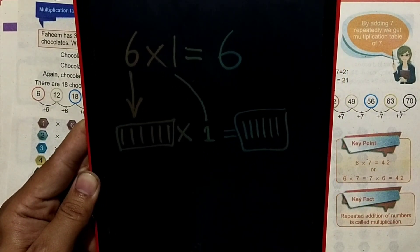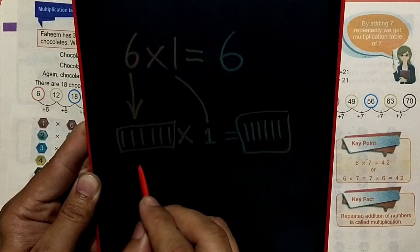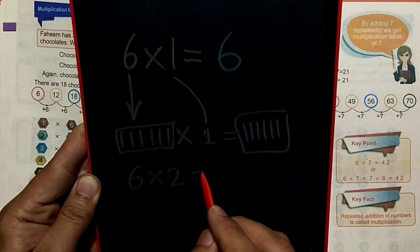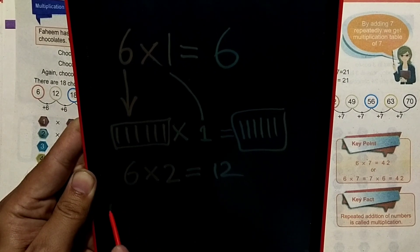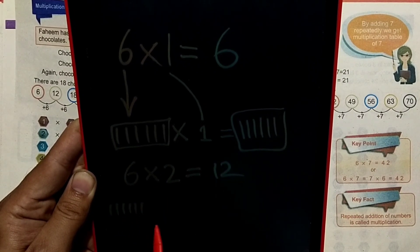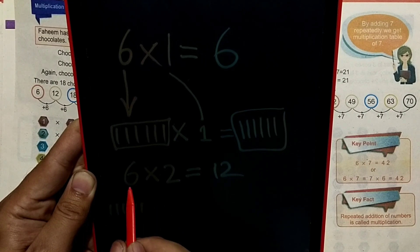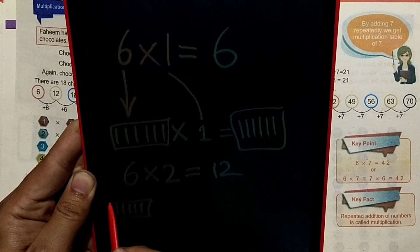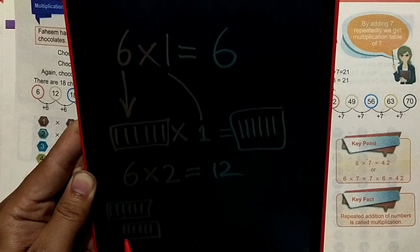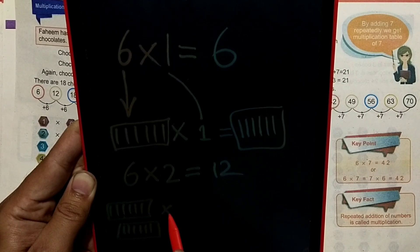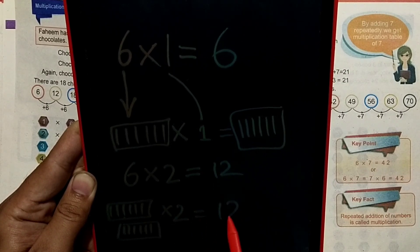I will tell you — 6 times 2 is equal to 12. 1, 2, 3, 4, 5, 6. Multiply 2 — 2 means 2. 1, 2, 3, 4, 5, 6. 2 is equal to 12.